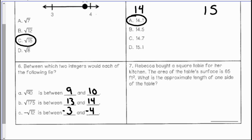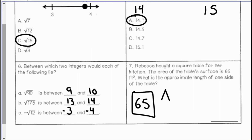Number 7: Rebecca bought a square table for her kitchen. The area of the table's surface is 65 square feet. What is the approximate length of one side of the table? For a square table, area equals side squared, so one side will be the square root of 65, because the area is 65.